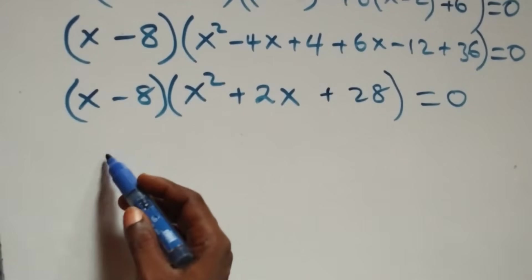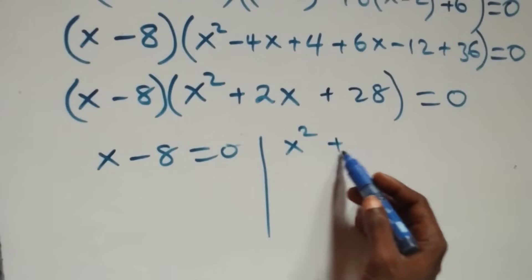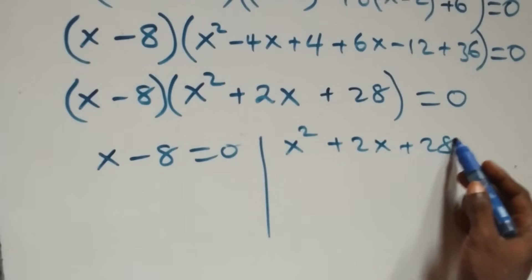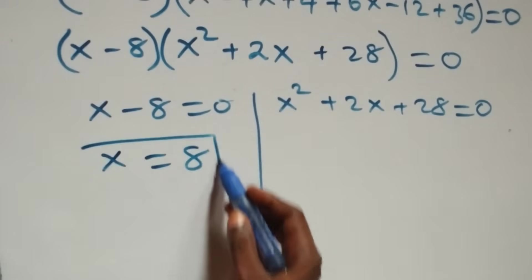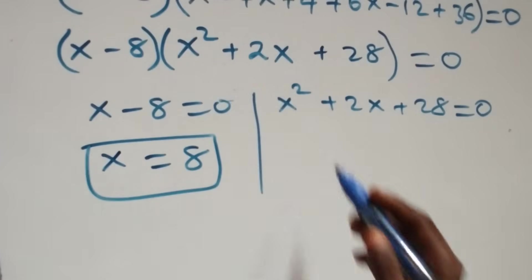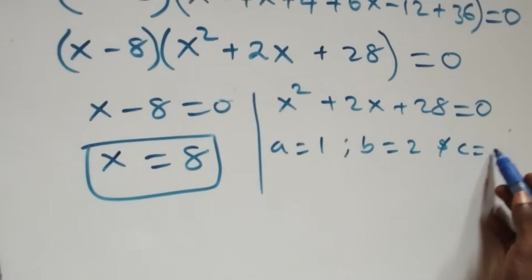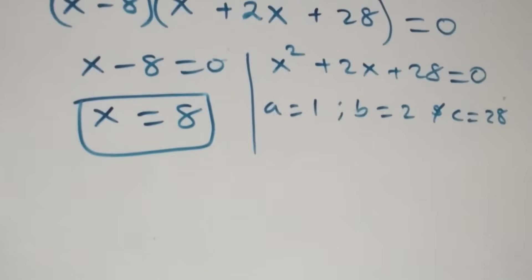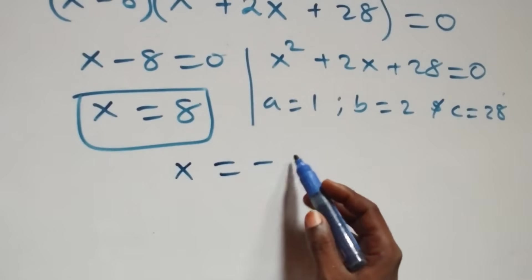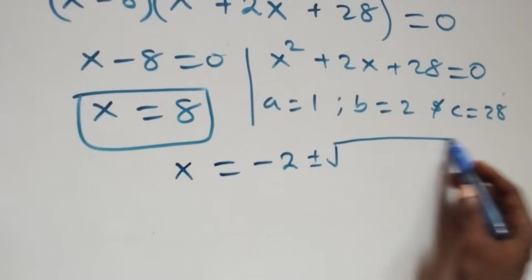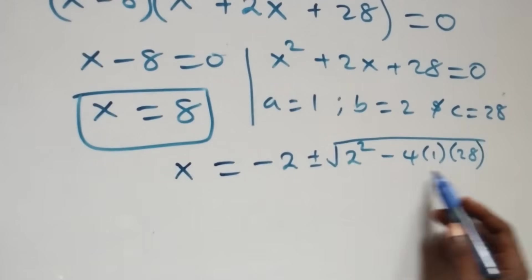We have two possible cases: x minus 8 equals to zero, or x squared plus 2x plus 28 equals to zero. On this side, x equals to 8, which is also a real solution. On the other side we have a quadratic equation where a equals 1, b equals 2, and c equals 28. Applying the quadratic formula, this becomes x equals to minus 2 plus or minus square root of 2 squared minus 4 times 1 times 28.